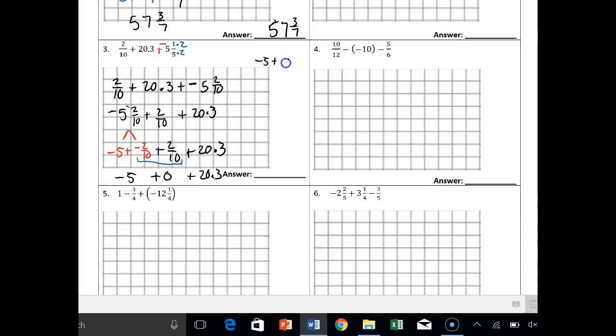And now we just have basically negative 5 plus 0 plus 20.3, and basically we have a DSSM problem here, right? It's gonna be negative 5 plus 20.3.